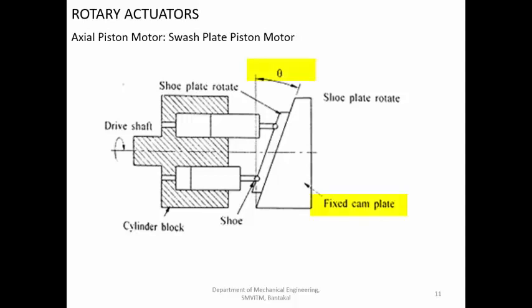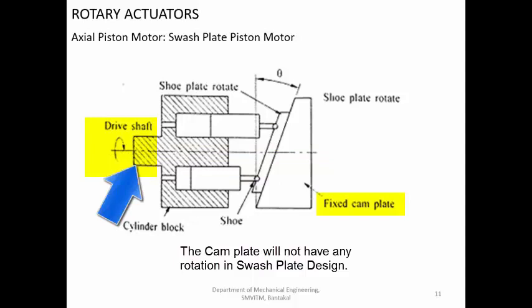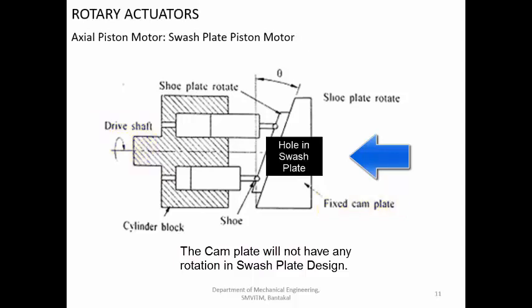Now why is it called axial piston motor? It is called axial piston motor because this is the axis of the output shaft — that is the drive shaft — and the piston axis is parallel to that axis. That is why it is called an axial piston motor. You are having a fixed swash plate, so it is a swash plate piston motor. You can have the drive shaft on one side or on the other side — both designs are possible. If you have the drive shaft on the other side, the swash plate will have a cavity in the middle through which the drive shaft is taken out.